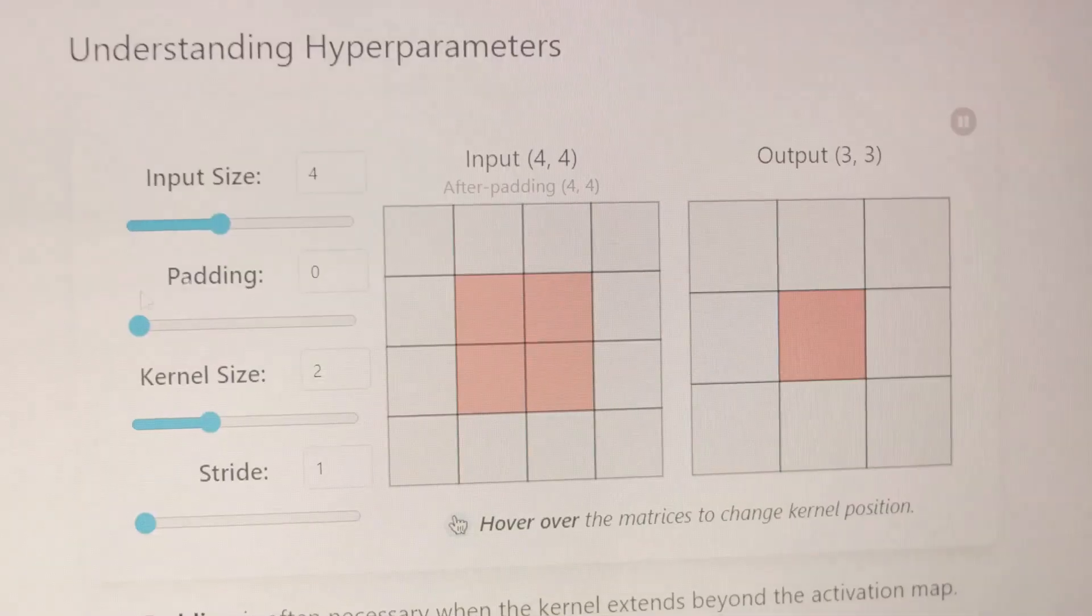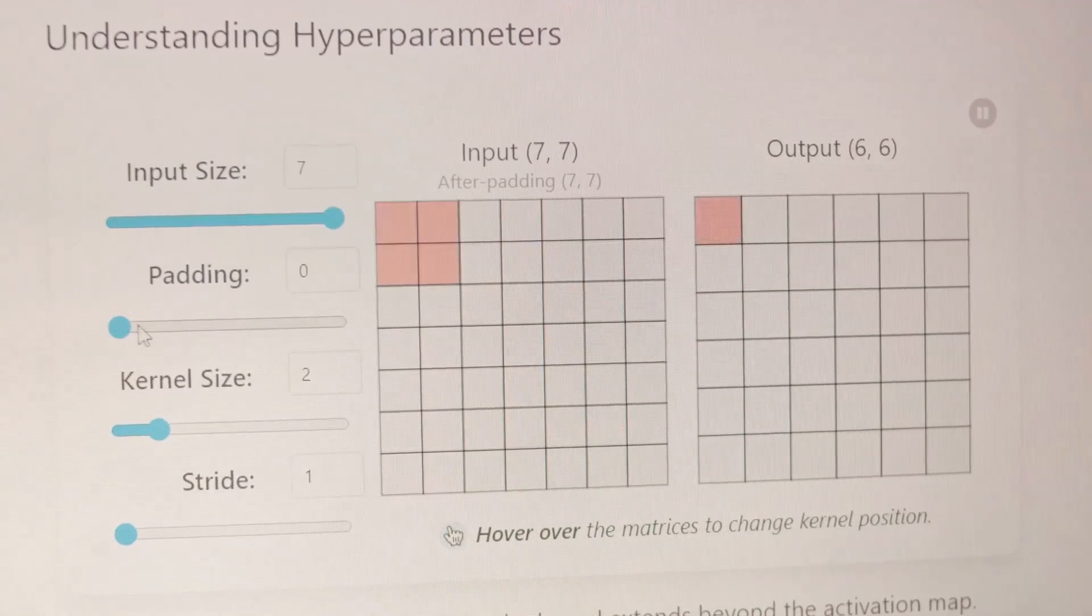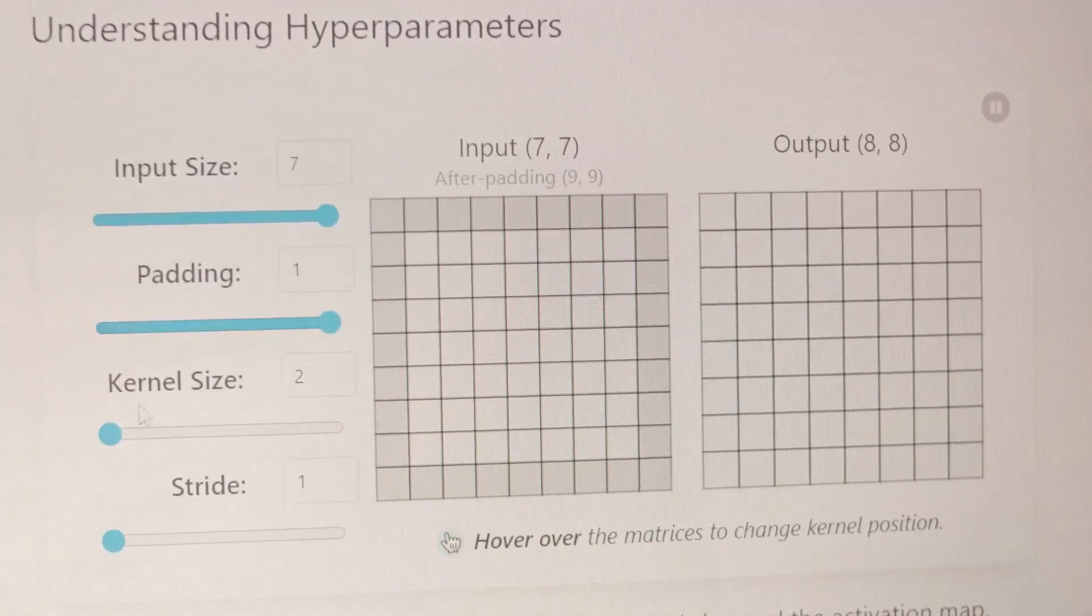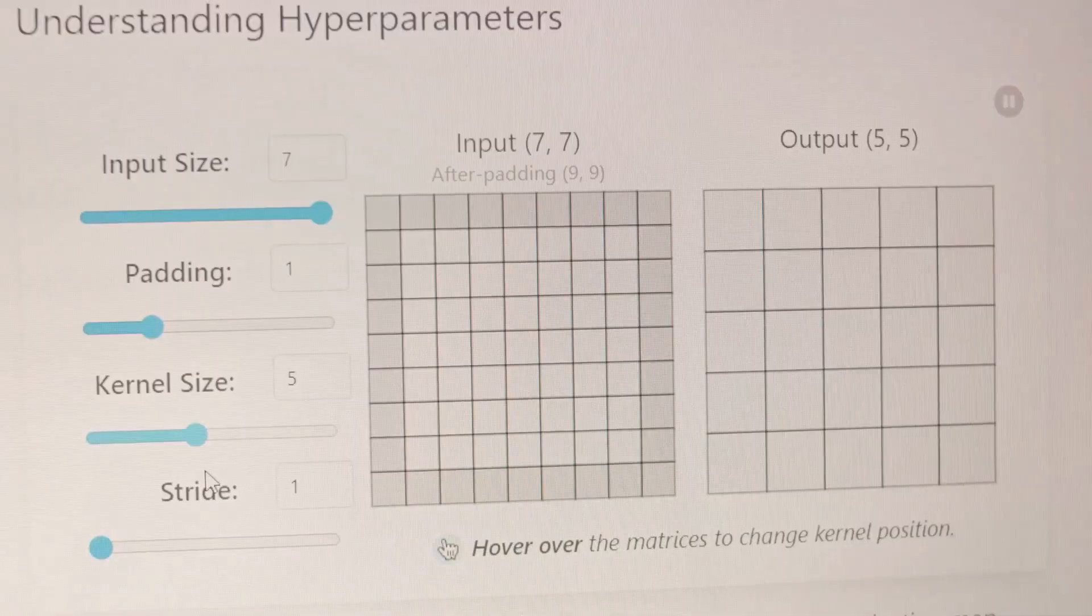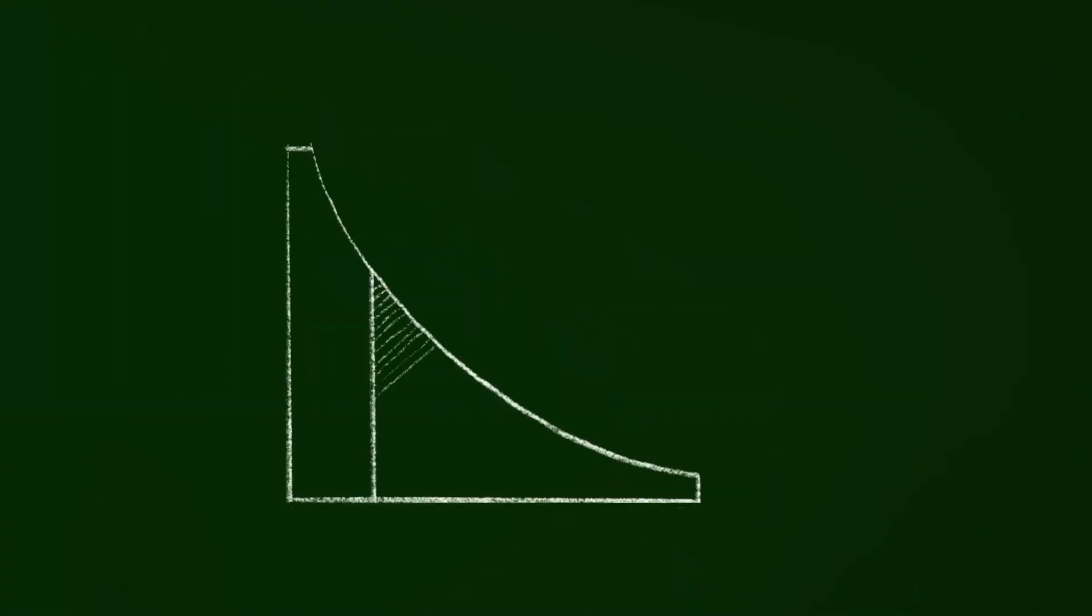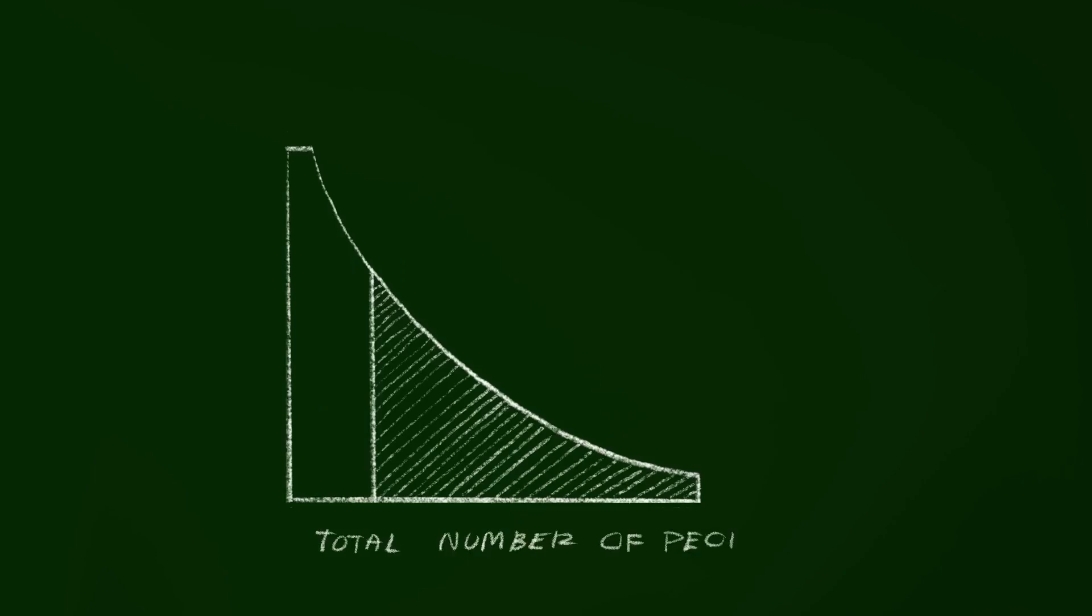This essentially means that more data points are located in the tails of the distribution, indicating more outliers. Conversely, a shorter, less spiky tail signifies low kurtosis, suggesting fewer outliers.